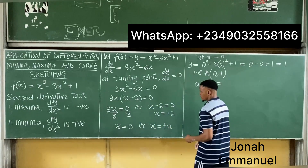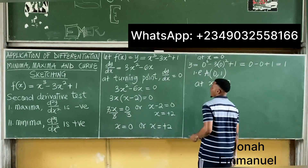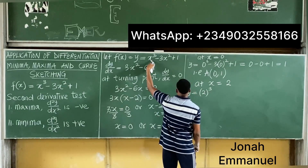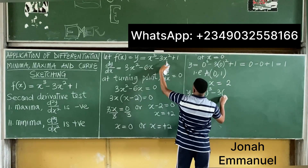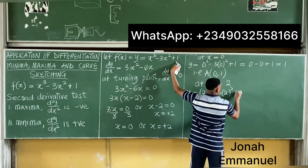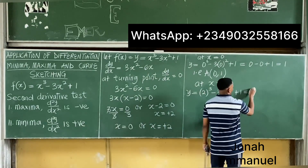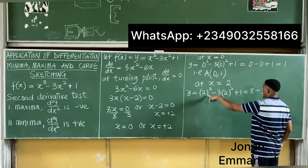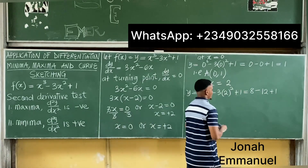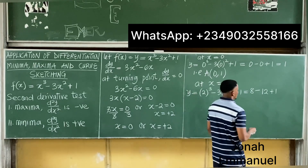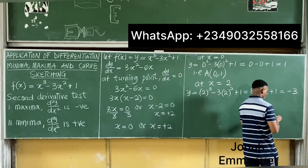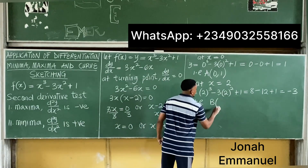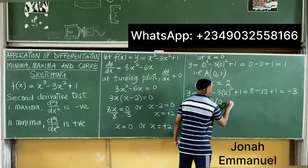Let's try point B at x equal to 2. y equals 2 cubed minus 3 times 2 squared plus 1. That's 8 minus 3 times 4 plus 1, which is 8 minus 12 plus 1. So 8 minus 12 gives minus 4, plus 1 gives minus 3. Point B is (2, -3).